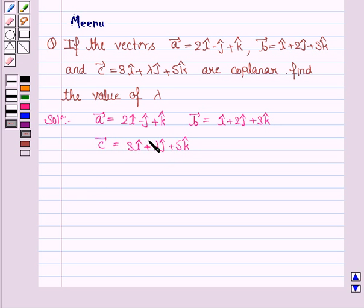Now we have to find the value of lambda if these three vectors are coplanar. If vectors A, B, and C are coplanar, then their scalar triple product is zero. That is, A dot B cross C equals zero.